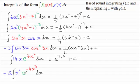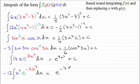And again for this one, f of x is e to the power x, so integrating e to the power x is e to the power x. X is replaced with g of x, giving e to the power minus 4x cubed, plus the constant of integration C.